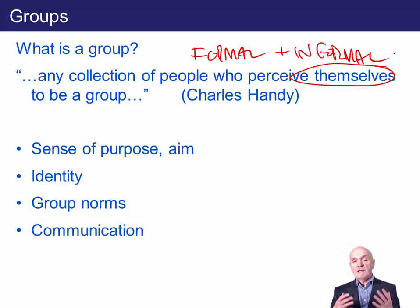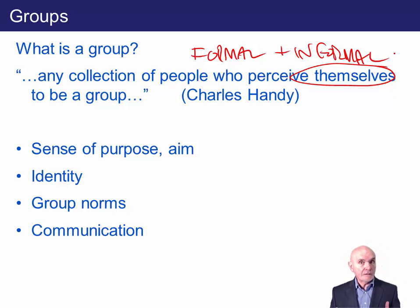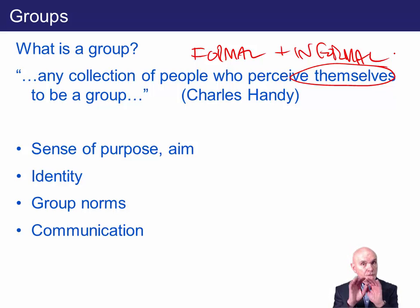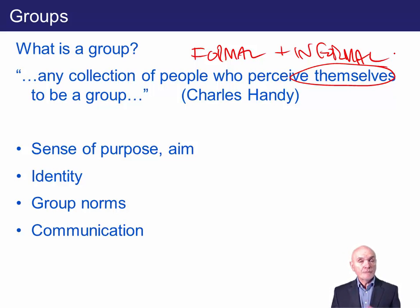An informal group's sense of purpose might be not to increase productivity, or to resist coming into work on a Saturday, or it might be a more positive aim — maybe to improve quality. Groups also have an identity: you know who's part of the group and who's outside it, who's 'us' and who's 'them'. There are group norms — accepted ways of behaving — and there is communication within the group, to communicate your range and communicate your norms.